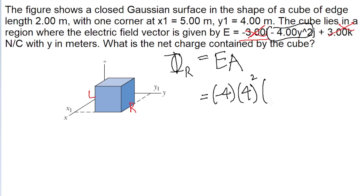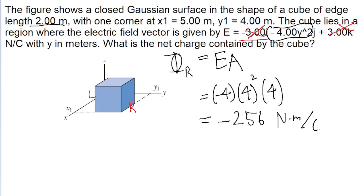Then this is multiplied by the surface area of the face. Since the problem tells us that the edge length of the cube is 2 meters, the area of the face is 2 squared, which is 4 meters squared. This area is also written as positive because the normal to this surface area points in the positive y direction. So putting this into a calculator — negative 4 times 4 squared times 4 — we get a value of negative 256 newton meters per coulomb squared. That is the electric flux through the right face.